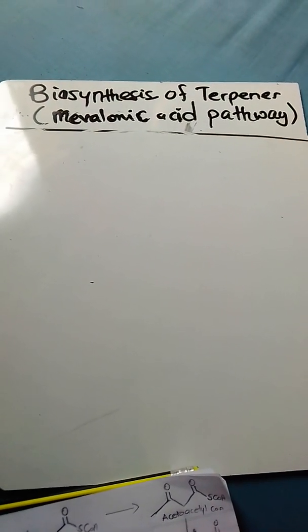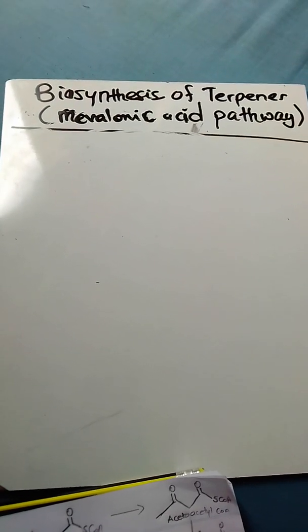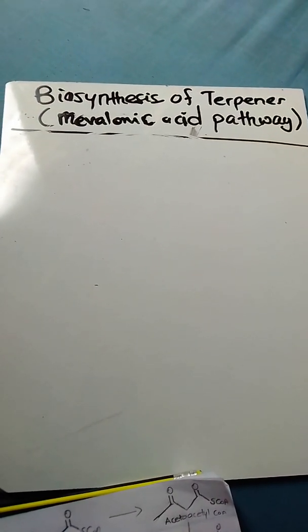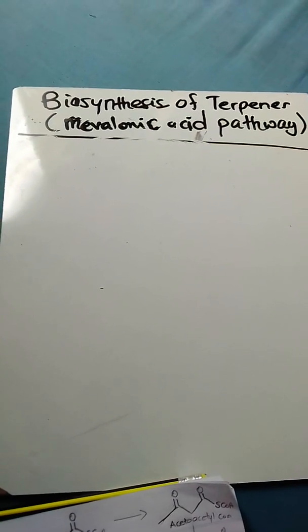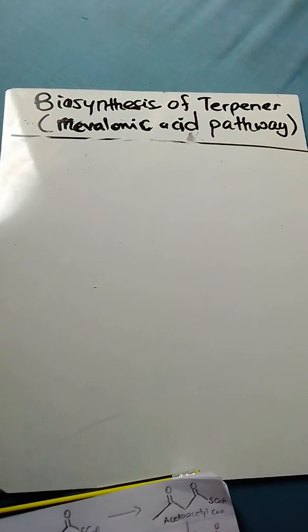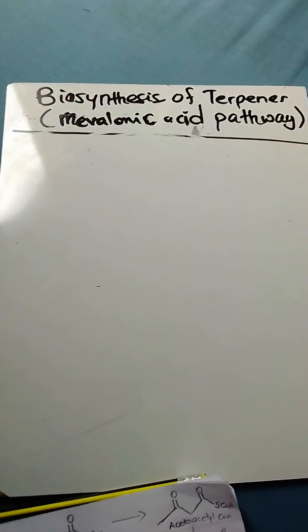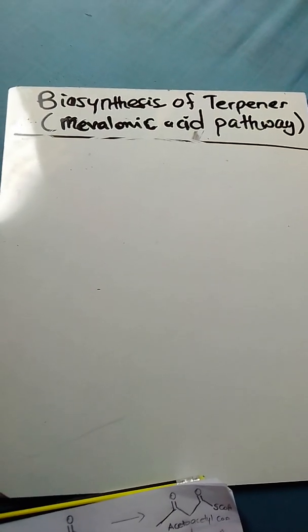The mevalonic acid undergoes pyrophosphorylation to produce mevalonate pyrophosphate. The resulting compound then undergoes decarboxylation and dehydration to produce IPP. The IPP then isomerizes to form DMAPP.